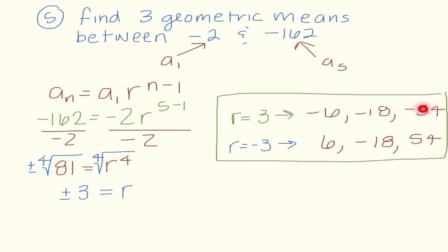The reason I need both answers is that based on the difference between these two numbers, I do not have enough information to know if the ratio is positive or negative. So we need to find both situations. Hopefully this gives you a little taste of some different ways we can use our nth term geometric formula.